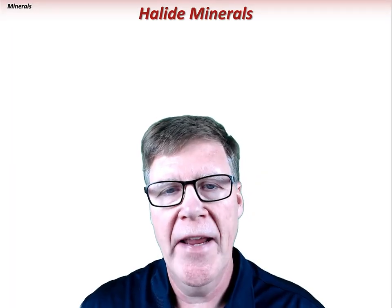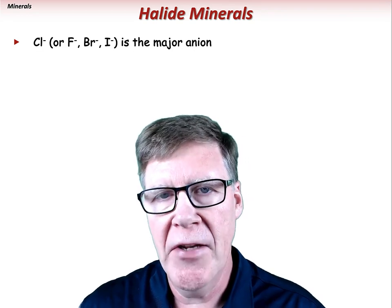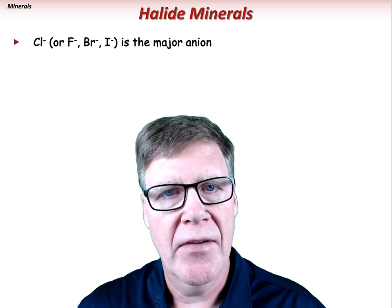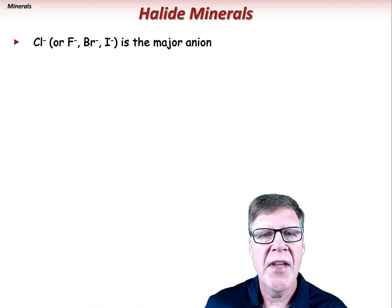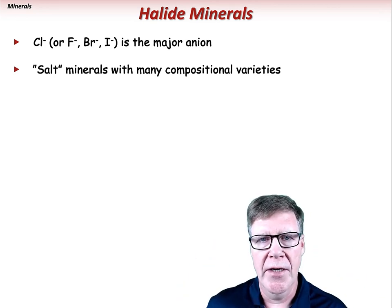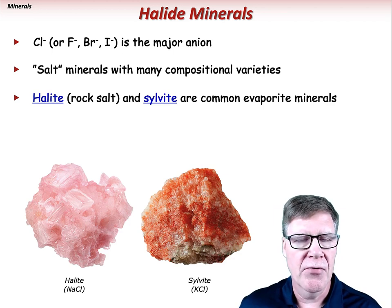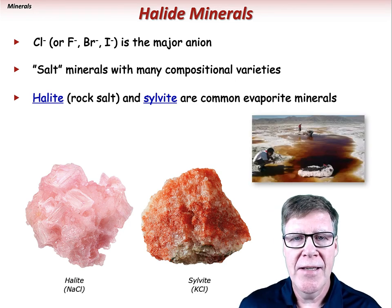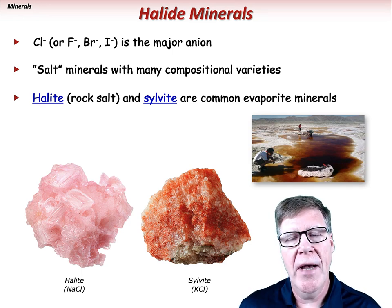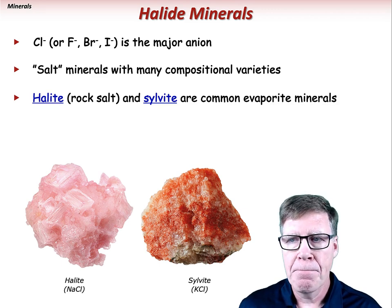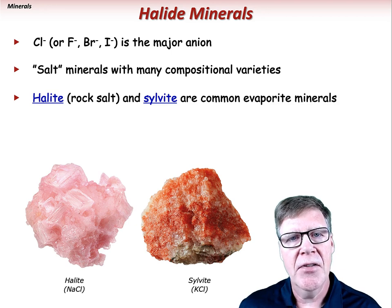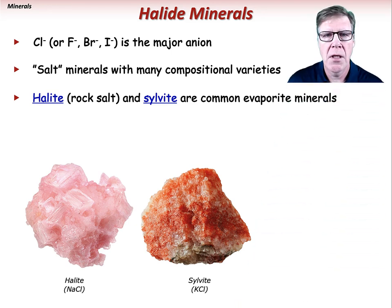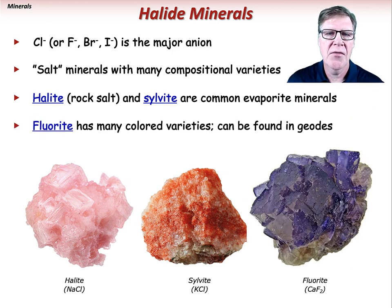The last group of minerals are the halides. In these minerals, chlorine is the major anion, but could include fluorine, bromine, or iodine. Most halides are salt minerals with many compositional varieties. Halite, or sodium chloride — rock salt — takes its name from the Greek word for salt. Pink halite found in some brine pools gets its characteristic color from salt-tolerant halobacteria. Sylvite, or potassium chloride, is another halide, and both halite and sylvite are common evaporite minerals. Fluorite has an assortment of colored varieties and is sometimes found in crystal-lined cavities known as geodes.